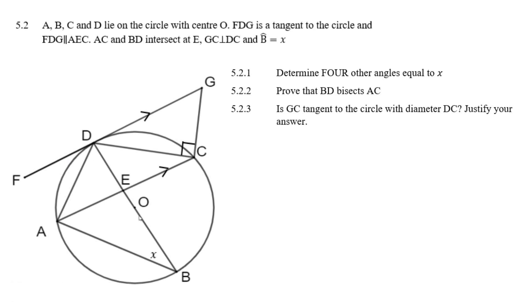They tell us O is the center, so D, O, B is the diameter. And they tell us that D, C is perpendicular to this G, C here. That's 90 degrees. Four other angles equal to X.